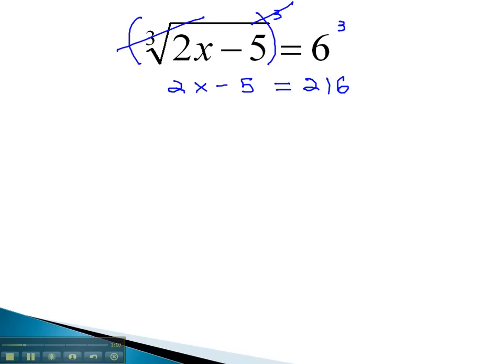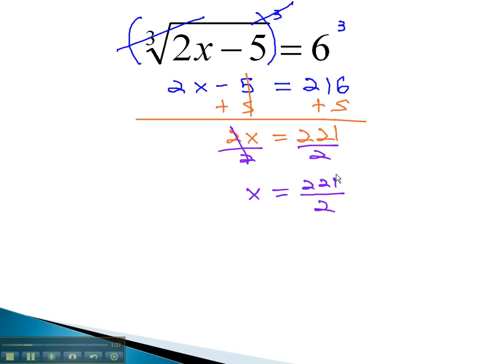We can quickly solve this remaining equation by adding 5 to both sides, giving us 2x equals 221, and finally dividing by 2. x is equal to 221 over 2, or you can make that into a decimal by dividing 221 by 2 to get 110.5.